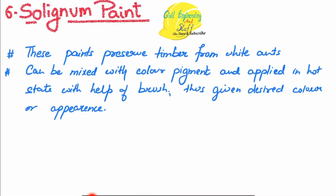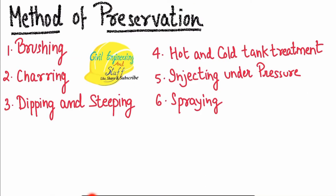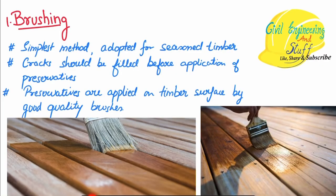Those were the various preservatives available. Now, how do we apply these preservatives over the timber surface? There are six methods: brushing, charring, dipping and steeping, hot and cold treatment, injecting under pressure, and spraying. The first and simplest method is brushing — we dip a brush into the preservative and apply it over the timber surface. One thing to note is that any cracks on the timber surface should be filled before applying the preservative by brushing.